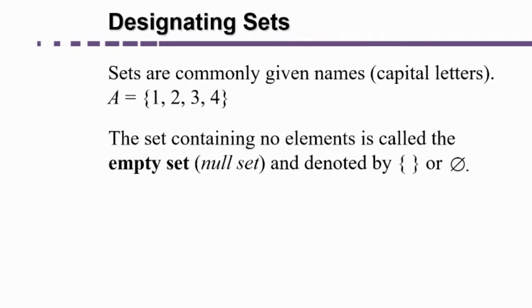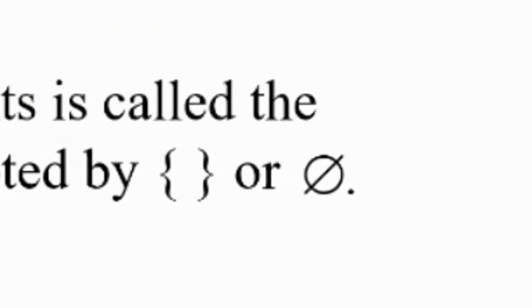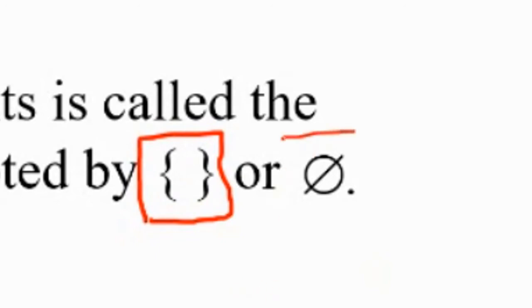It's also possible that a set has nothing in it. This set is called the empty set. It's a unique set. A couple of different ways that you can represent the empty set. One, you can just make the curvy brackets but with nothing in them. So that's a set. The curvy brackets indicates it's a set. And then the fact that there's nothing listed indicates there's nothing in the set.